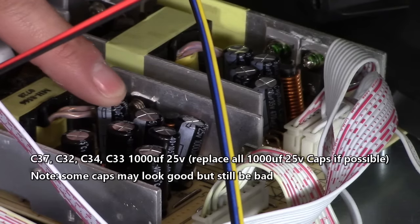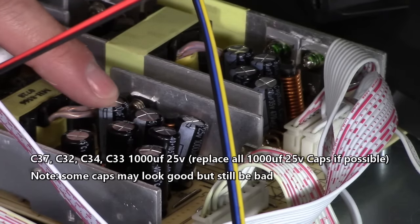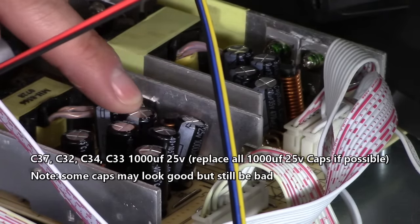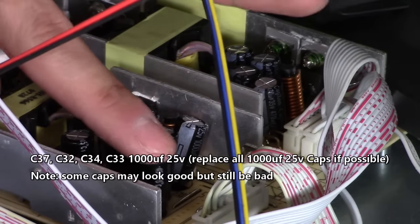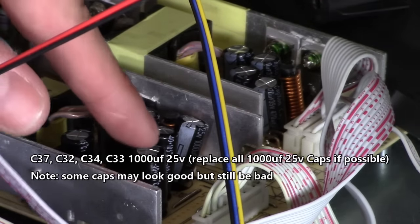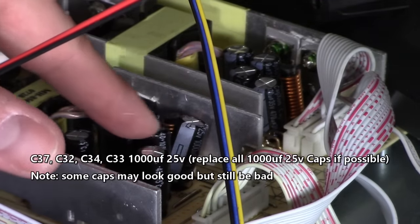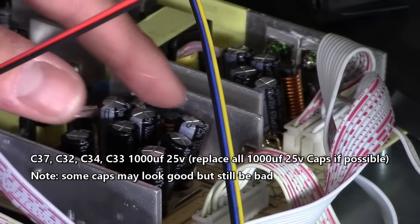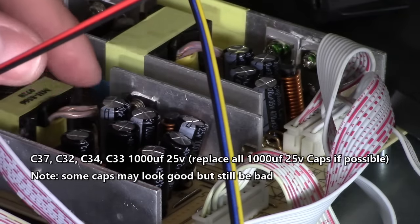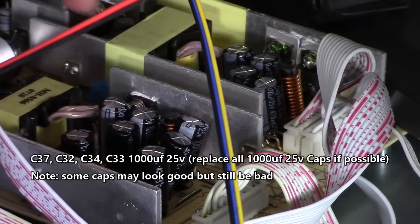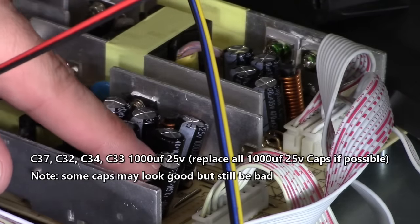So right here, I feel a swollen capacitor. It's bulged on top. And this is bulged on top. And this is bulged on top. And this is bulged on top. So we've got C37 and C32. That's the location number on the board. C34 and C33. Let's see first the value on them.